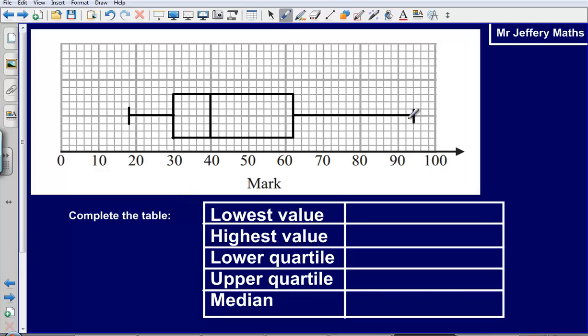So we've got this box plot here. We're being asked to complete the table. Find the lowest value. So the lowest value is where the tail begins that comes out of the box. And that is at, as we can see, that's at 18. So each of these little squares are worth 2 each.